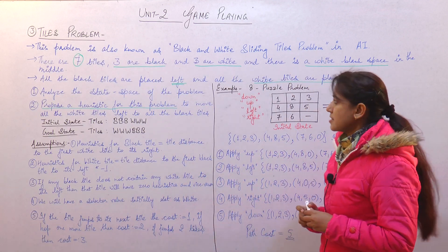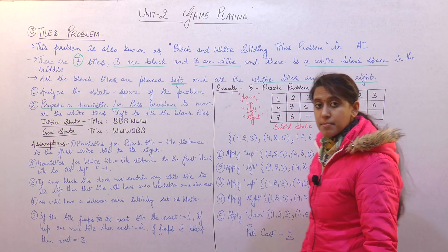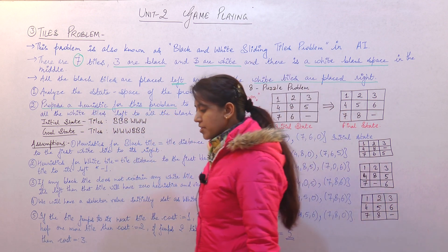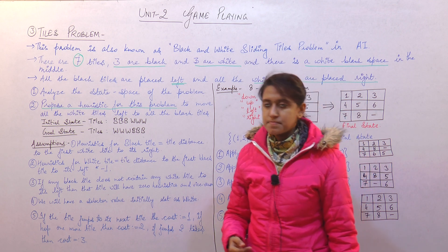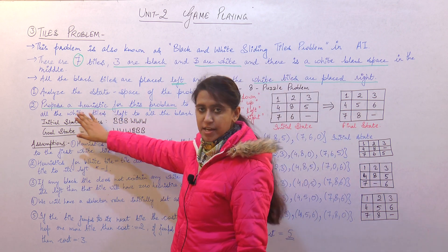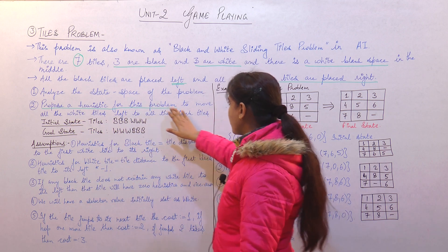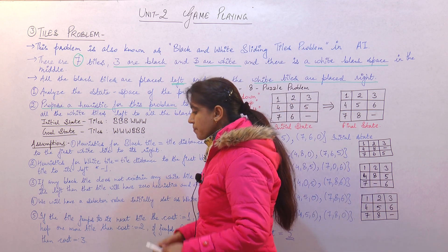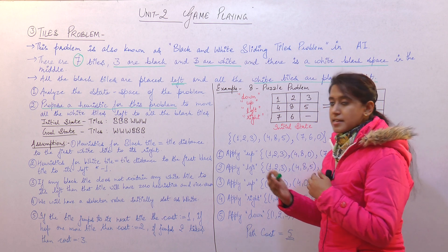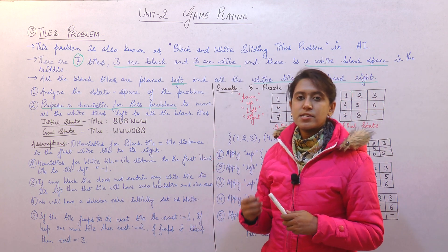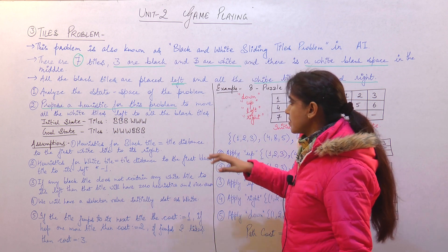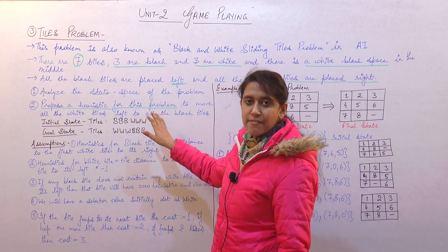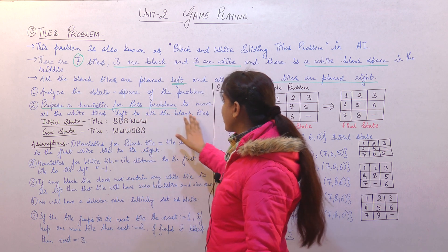After analyzing the state space of the black and white tiles problem, we will propose a heuristic — that is, a certain set of rules — or a solution to move all the white tiles to the left of all the black tiles.